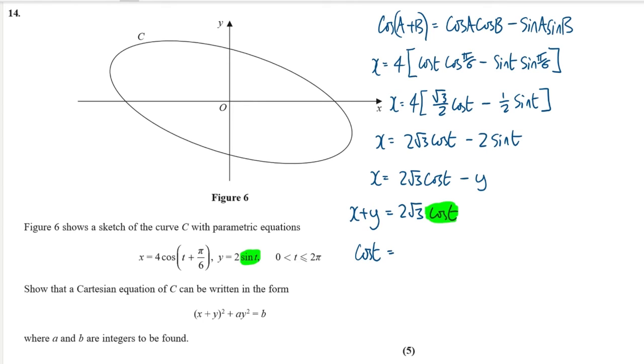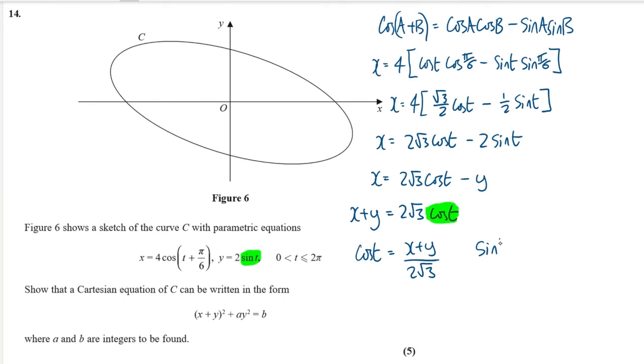So this would give me cos t equals (x plus y) over 2 root 3 and I'll make sine t the subject of the other equation which will give me sine t is equal to y over 2. And then I can use our trusty old formula cos squared plus sine squared is equivalent to 1.